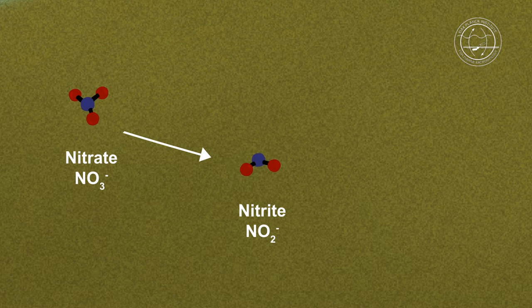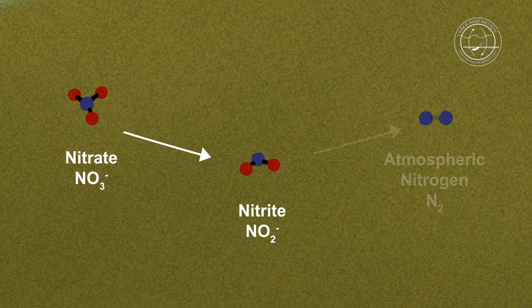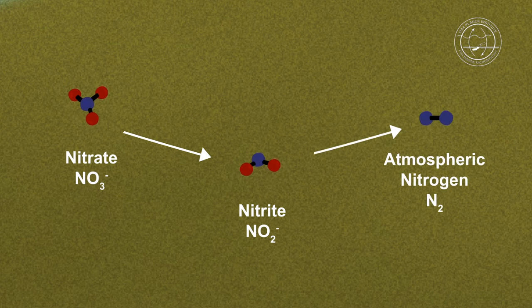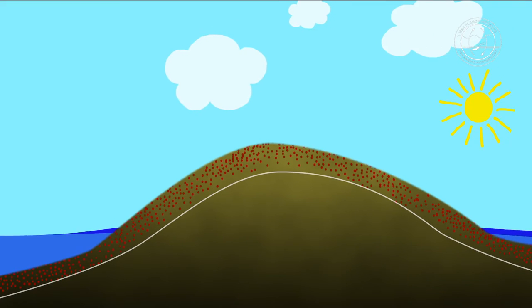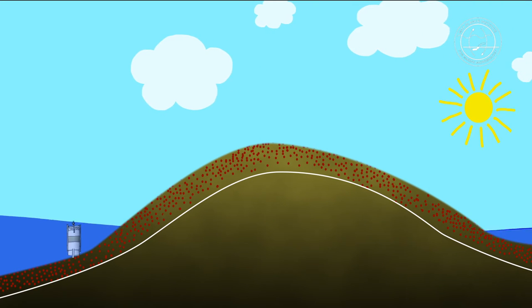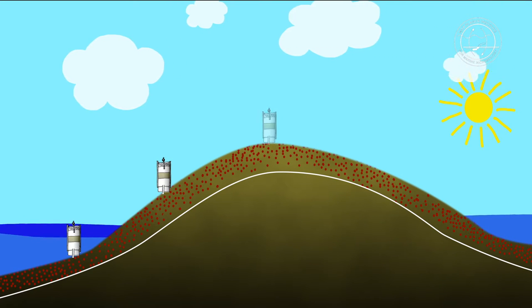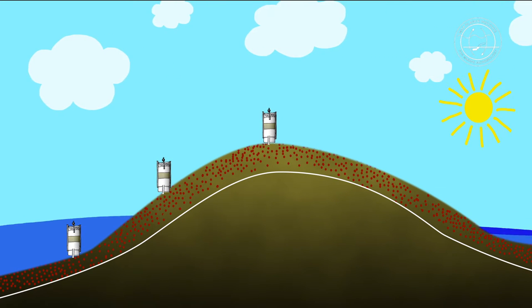When breathing nitrate, the organisms turn nitrate into nitrite. Nitrite then turns into nitrogen gas, which makes up most of the atmosphere. This process is called denitrification. To understand it better, we study three different spots in the Wadden Sea.